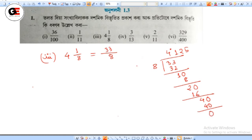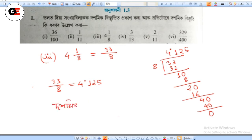Next, 33 divided by 8. Now we have to find the decimal. So, the number is 4.125. We can see that 4.125 is the result of 33 divided by 8.